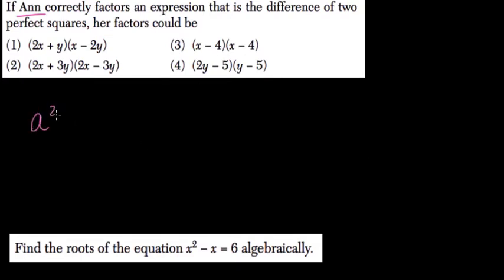Well, a squared minus b squared, difference of two squares, always equals a plus b times a minus b.